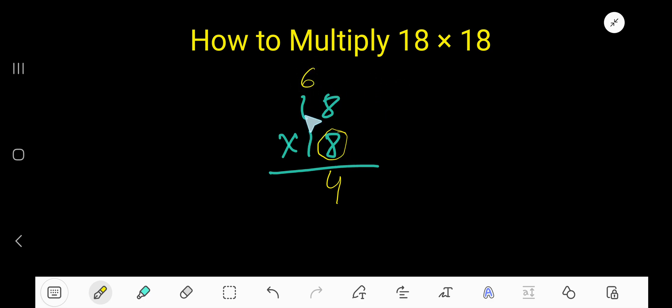8 times 1 is 8. Then 6. That is 8 plus 6 equals 14. Write 4 here and carry 1 to the next column. There is no one here, so write 1.